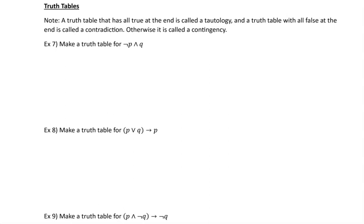Now we'll build truth tables for expressions with multiple operations. The key is to go one operation at a time and refer back to the basic truth tables. A truth table that has all true in the final column is called a tautology. A truth table with all false is called a contradiction. If it has a mix of true and false, it's called a contingency.